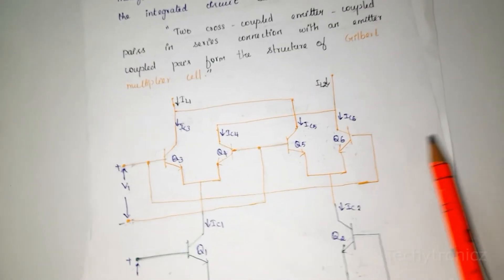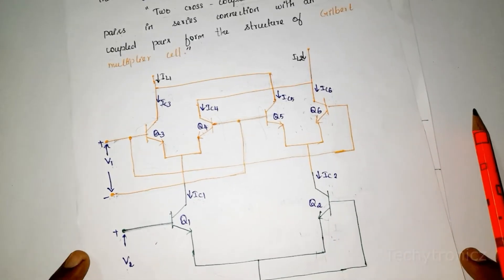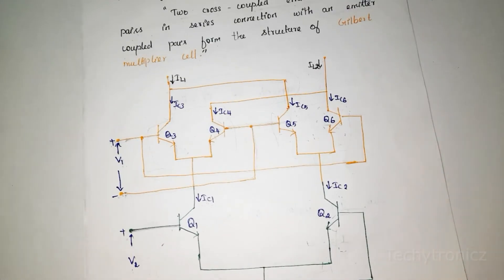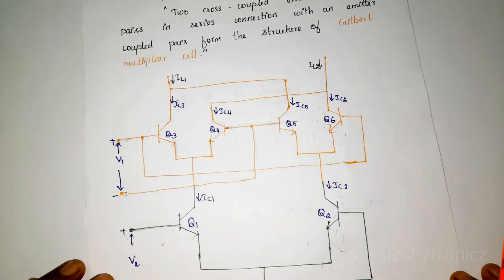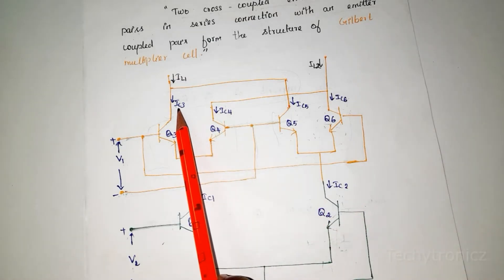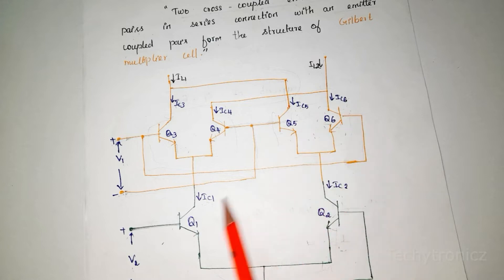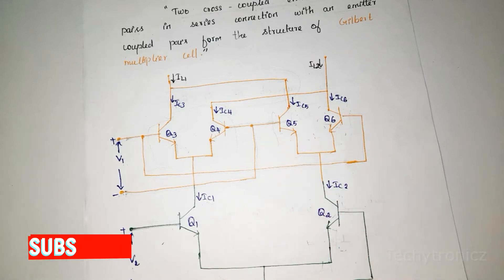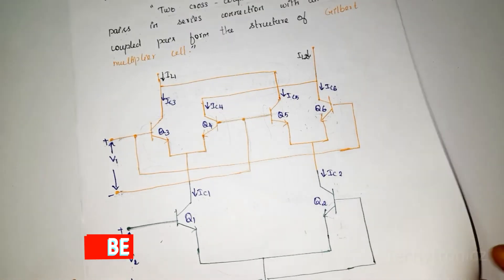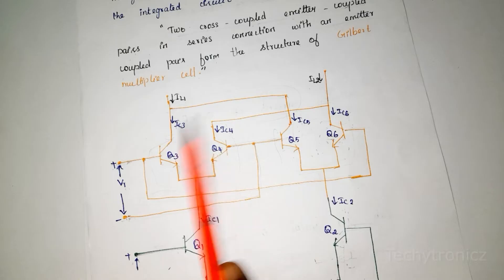This is actually a very simple circuit diagram. Next, we are going to calculate the collector currents IC3, IC4, IC5, IC6, IC1, and IC2 — all six currents. First, we are going to calculate the collector currents of the Q3 and Q4 transistors.